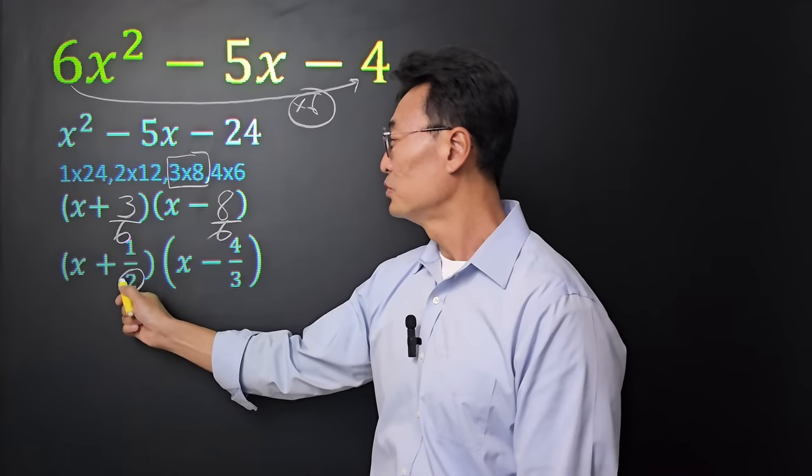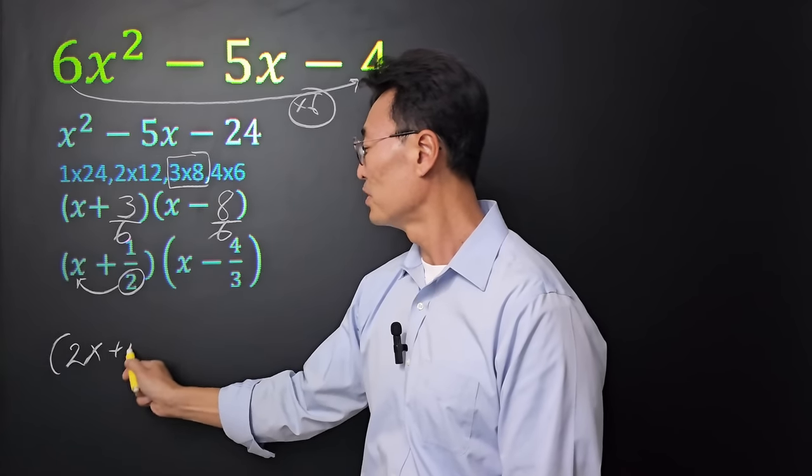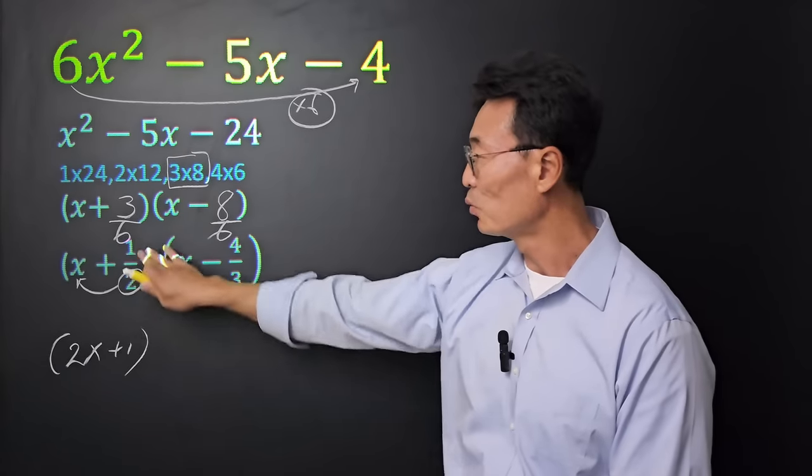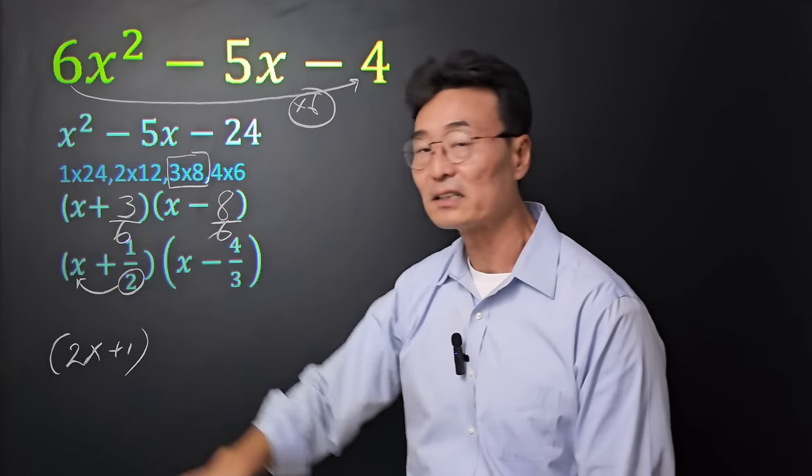We're going to take that 2, multiply it to the x, giving us 2x plus 1. Notice the 1 stays, the 2 is gone, since we've tacked it on to the x.